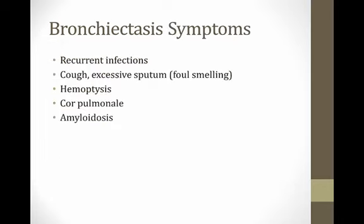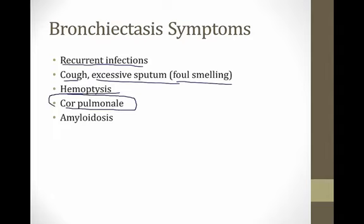Patients with bronchiectasis get recurrent infections — recurrent pulmonary infections can both cause bronchiectasis and be a consequence of it. These patients have cough and excessive, often foul-smelling sputum production, and can get hemoptysis. Hypoxia can lead to cor pulmonale, just like the other causes of obstructive lung disease. Bronchiectasis is also a rare cause of amyloidosis — anything that causes chronic inflammation can lead to secondary amyloidosis, which we often associate with rheumatoid arthritis, but bronchiectasis can also be a cause.